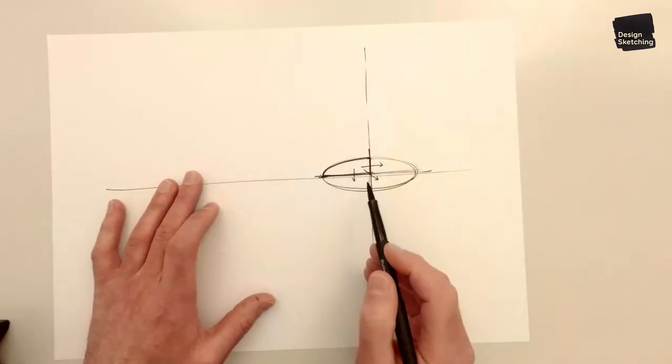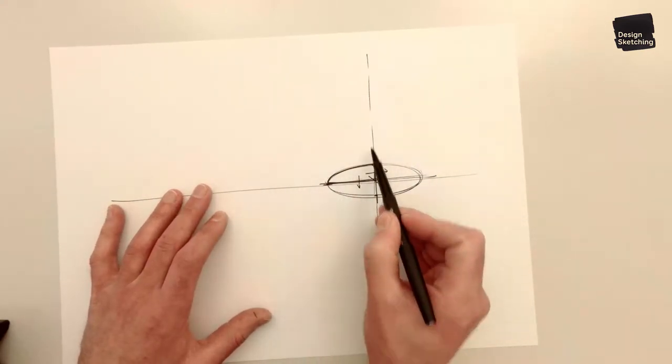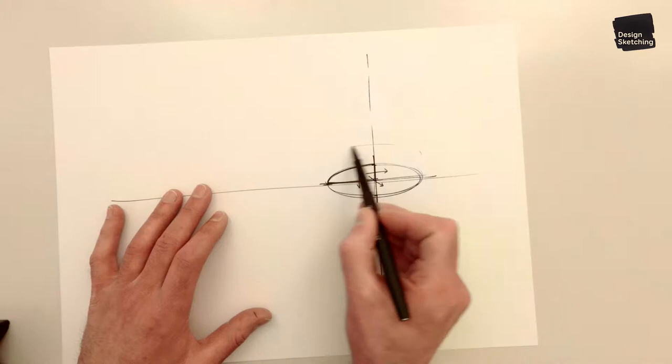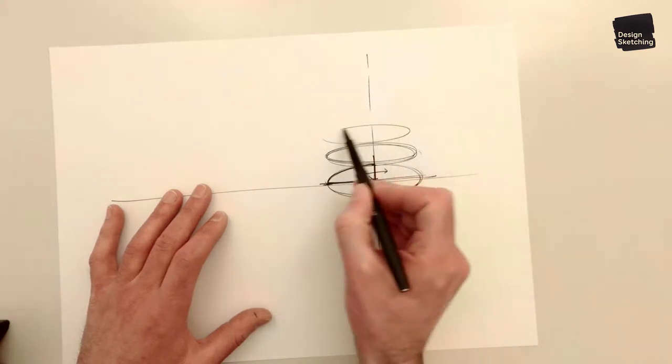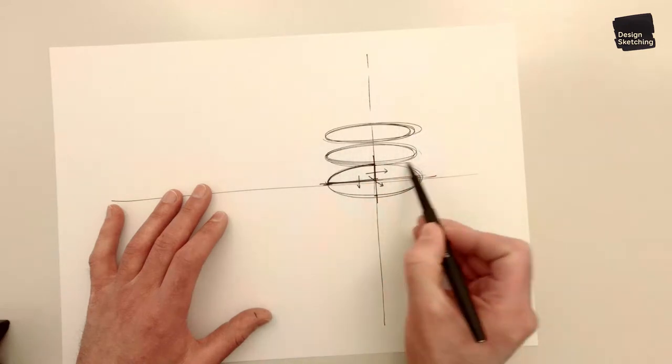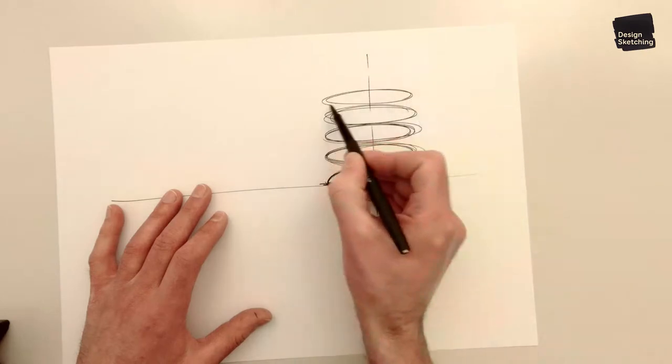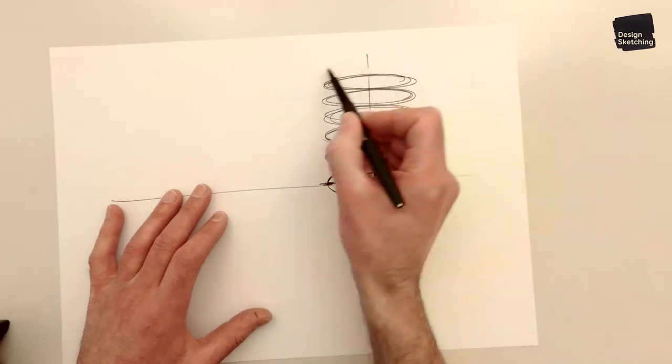So this is the exercise I like to do: draw another set of ellipses on top, but make the minor axis smaller as you go up. And try and keep them symmetrical and adjust the ellipses if you think they're not symmetrical.